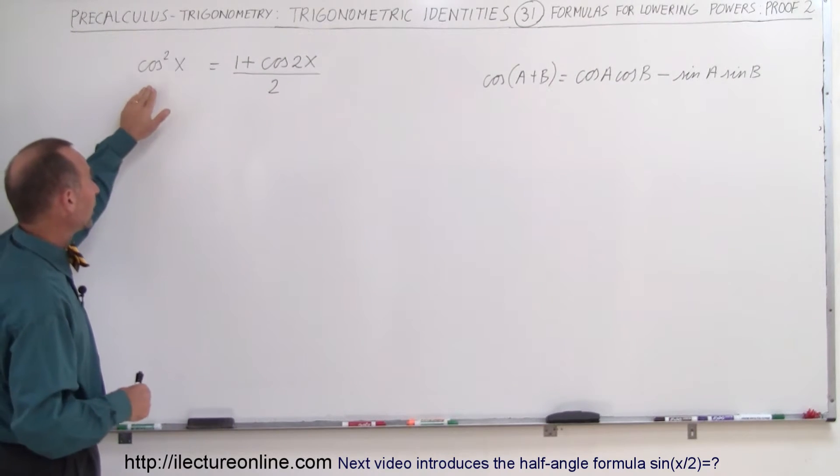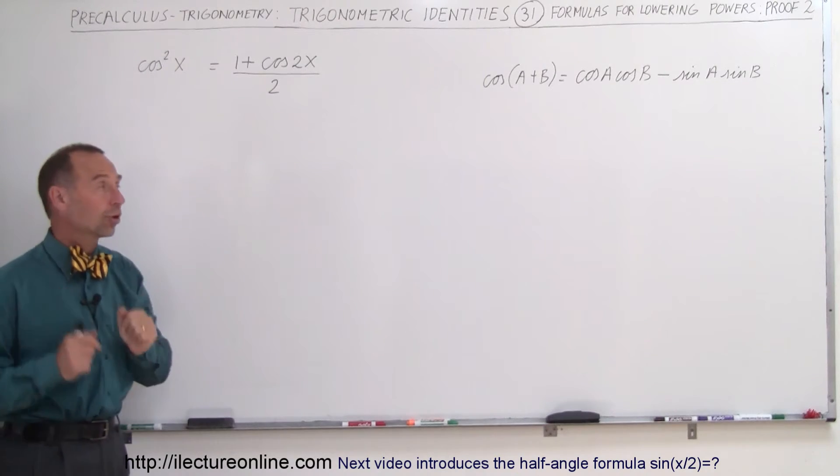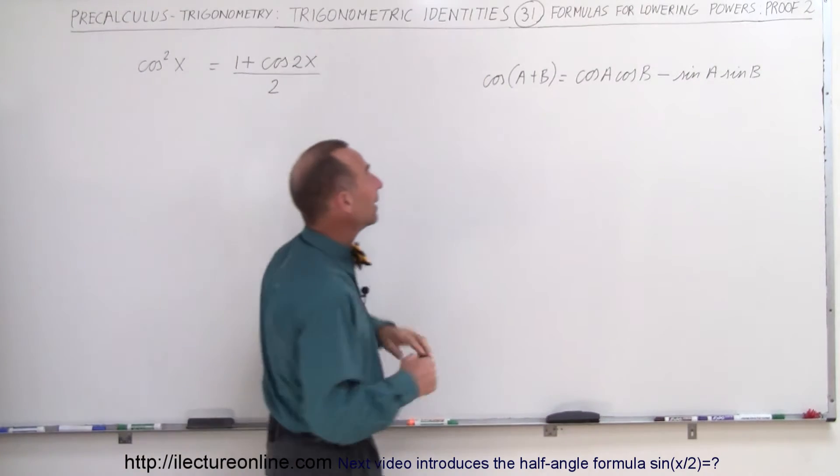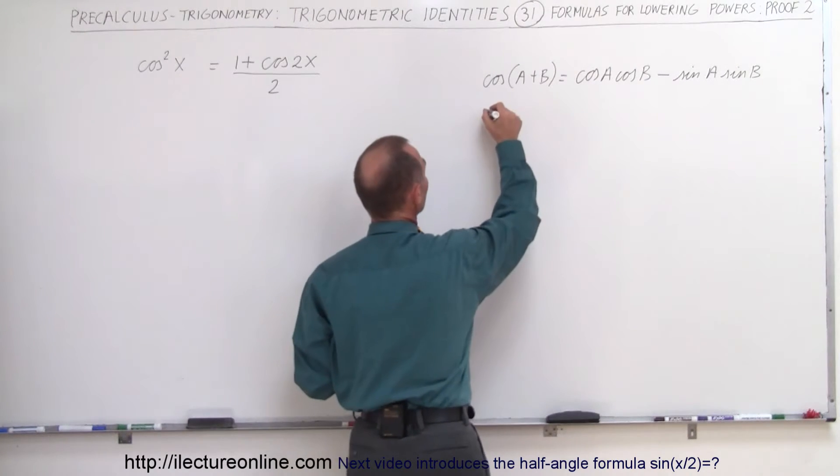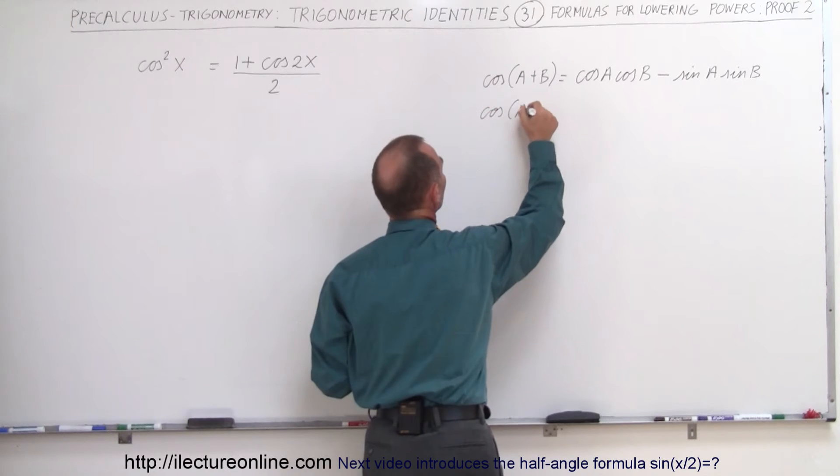So where did this come from? How do we know that this is equal to that? Again we'll start off with this identity right here where the cosine of a plus b is equal to that. So what we're going to do now is take the cosine of a plus a.